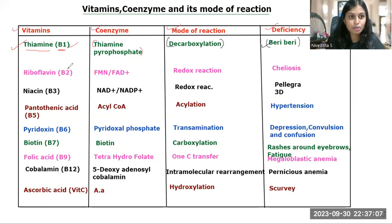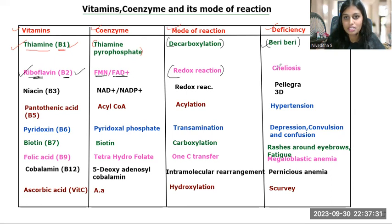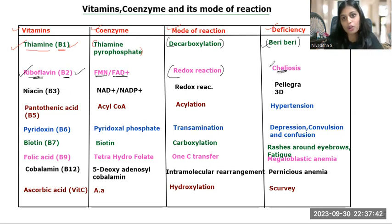Next is vitamin B2, that is riboflavin. The coenzyme of riboflavin is FMN and also FAD+. The mode of reaction is redox reaction in the case of vitamin B2. The deficiency leads to cheilosis — a small crack that takes place at the corners of the mouth, occurring when there is a deficiency of B2 in our body.